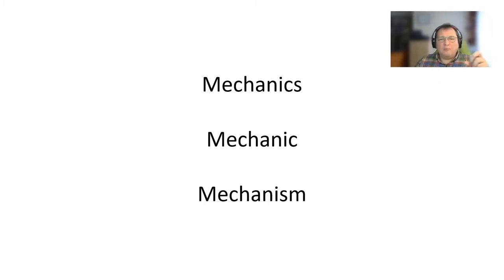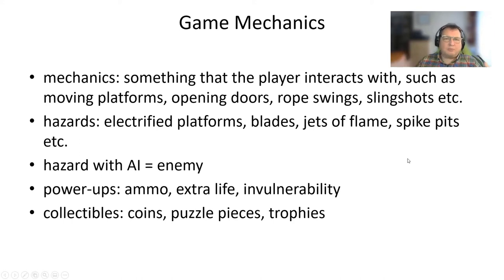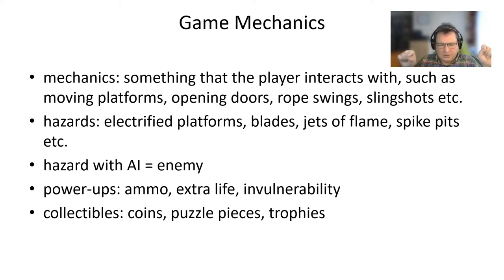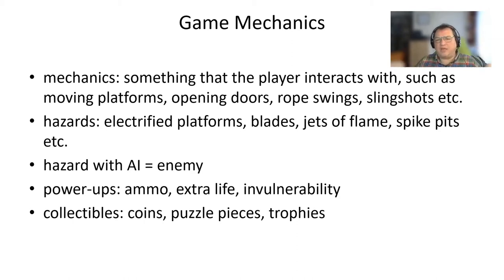Besides what I've described, 'mechanics' in the game also refers simply to something that the player interacts with — such as moving platforms, opening and closing doors, ropes, swings, slingshots, and so on. If a game mechanic is dangerous — like an electrified platform that can kill you, jets of flame, or spike pits — they will be called hazards. A hazard with an AI becomes an enemy. And we also have power-ups, collectibles, and so on.